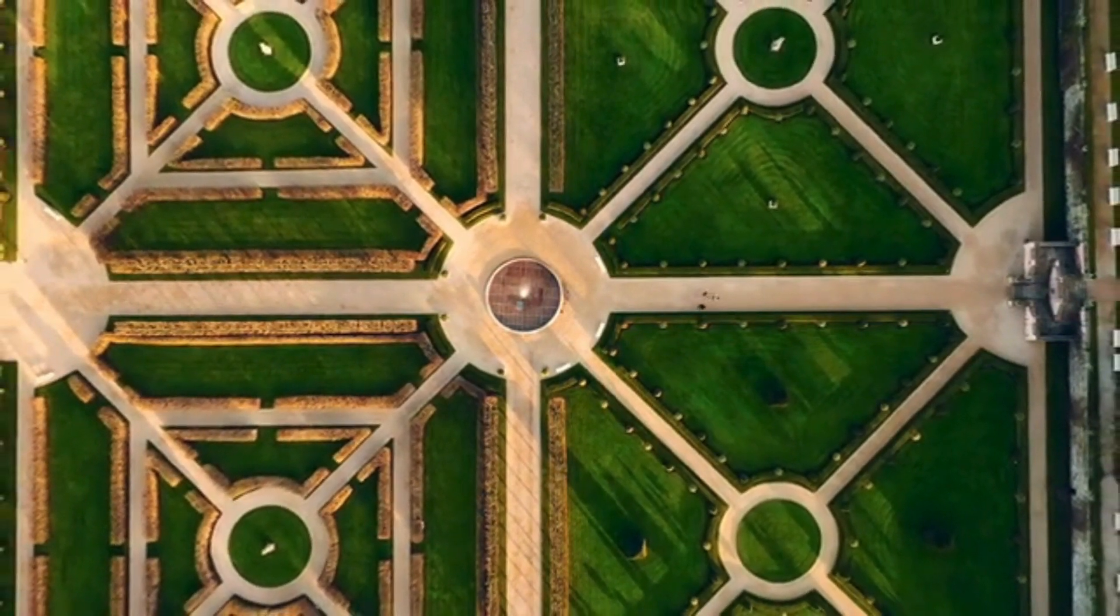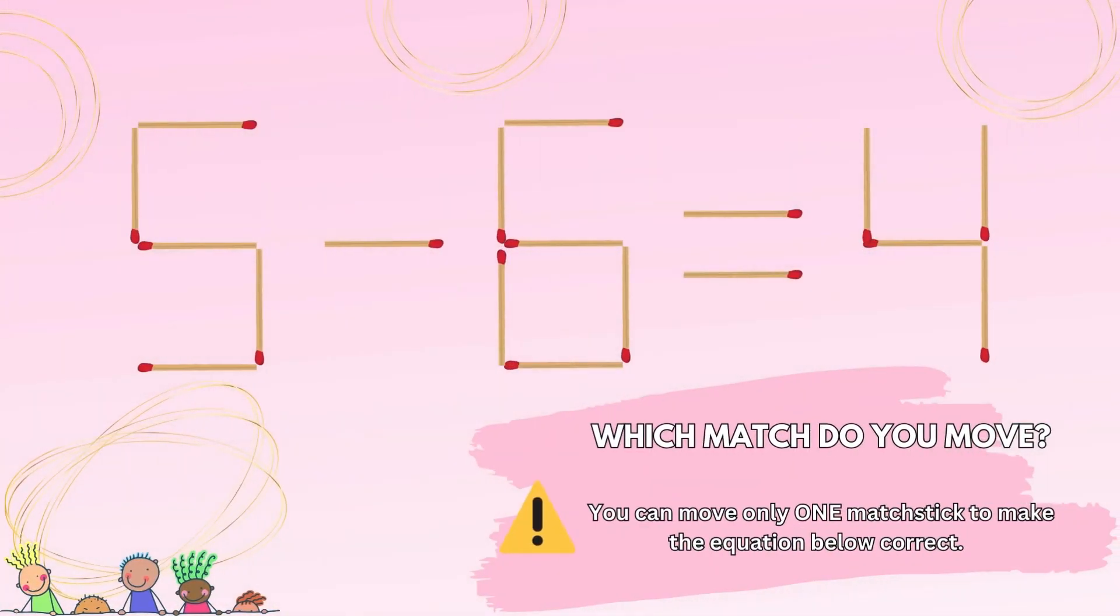First up, a crowd favorite, the matchstick puzzle. What you've got in front of you is a rather bogus equation. Your mission, should you choose to accept it, is to fix this equation by moving only one matchstick around.